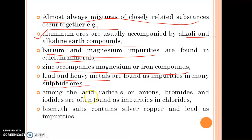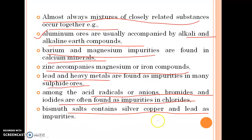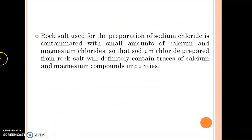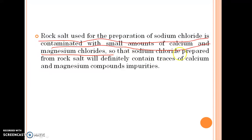Among the acid radicals and anions, bromides and iodides are often found as impurities in chlorides. Similarly, bismuth salt contains silver, copper and lead as impurities. Rock salt used for the preparation of sodium chloride is also contaminated with small amounts of calcium and magnesium chlorides, so that sodium chloride prepared from rock salt will definitely contain traces of calcium and magnesium compounds as impurities.